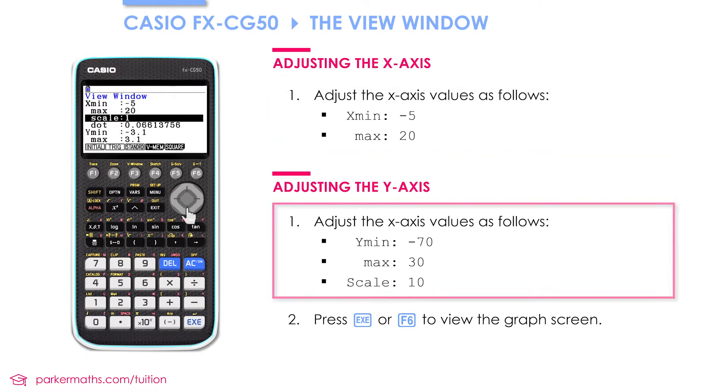Let's also change the y values by scrolling down. I'm going to set the y minimum to -70 and the maximum to 30. Because -70 and 30 are a bit further apart, I'm going to change the scale to 10. That means the y-axis will be marked every 10 units.